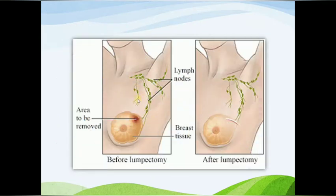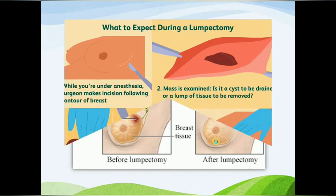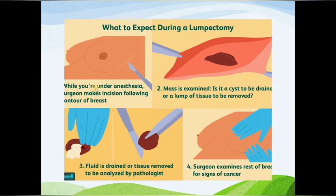This is the procedure for lumpectomy — this is the area of the tumor, and after the lumpectomy surgery this is the incision. First, under anesthesia, the incision is made, and the cancerous lymph nodes or benign cyst are removed.